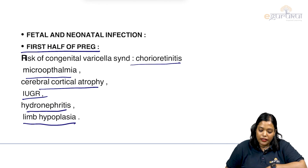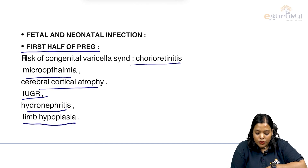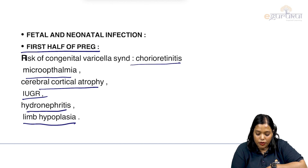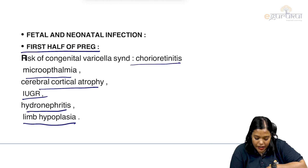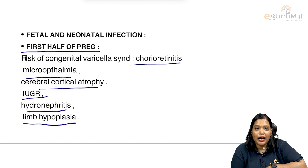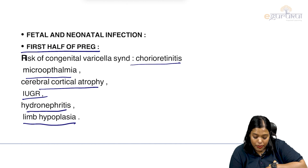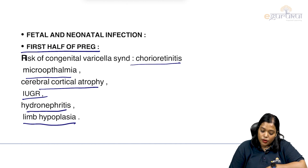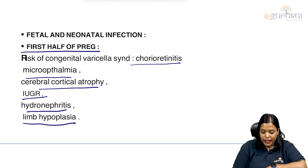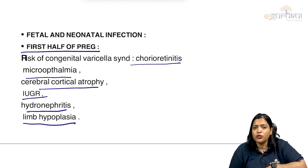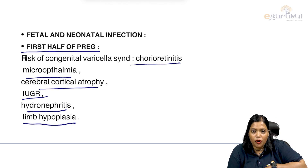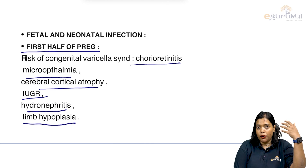So in the first half of pregnancy there is risk of congenital varicella syndrome. Features include chorio-retinitis, microphthalmia, cerebral cortical atrophy, IUGR, hydronephritis, and limb hypoplasia — the limbs will be very small. Most of these viral infections affect the brain, causing cerebral cortical atrophy, and the eyes also become small.